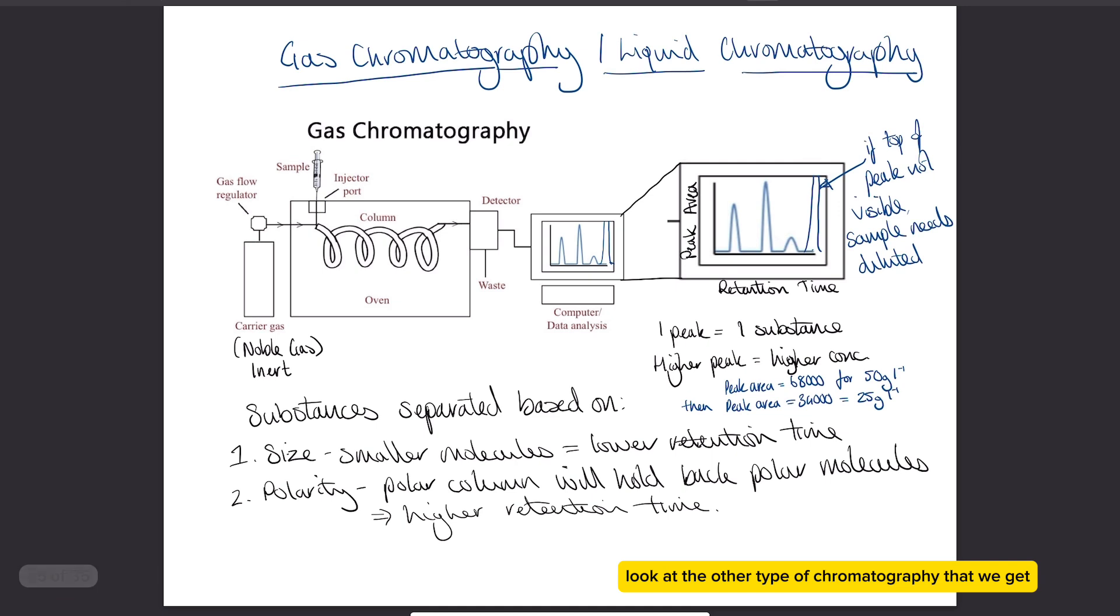If we then look at the other type of chromatography that we get, which is gas chromatography or liquid chromatography, also sometimes called high performance liquid chromatography, this works in a big machine. Within the gas chromatography machine we've got this thing called a column, so it's essentially a tube but we call it a column. The column is lined with what's known as a stationary phase, so it's got a coating inside of it, and that coating will cause molecules to travel through the column at different speeds. So again we get separation.